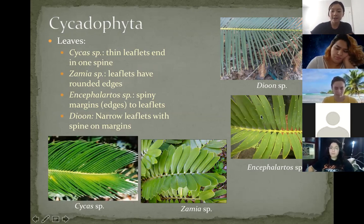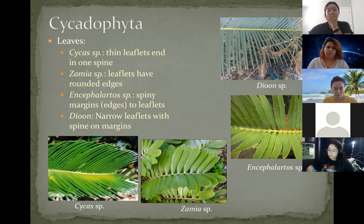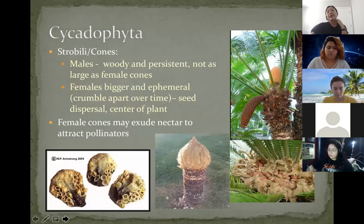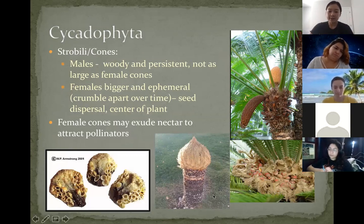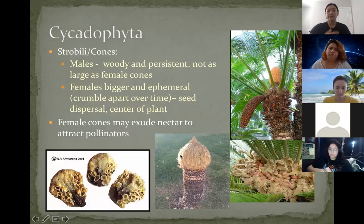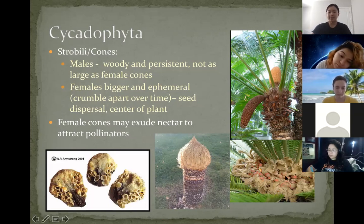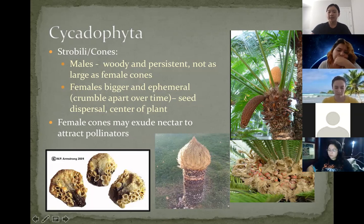For the cones of Cycadophyta: the male cones are woody and persistent — typically longer than the female cones, and they will not crumble apart. The female cones are huge — ginormous — but they are ephemeral, meaning they'll eventually crumble apart over time. The reason they crumble apart is to disperse their really colorful seeds, which are usually found in the center of the plant. The female cones are much bigger but ephemeral, whereas the male cones are woody and persistent.